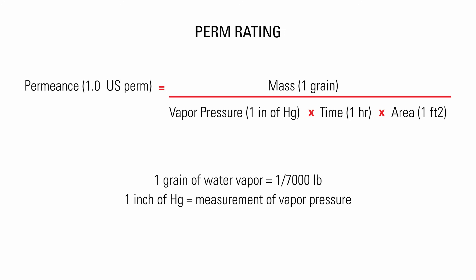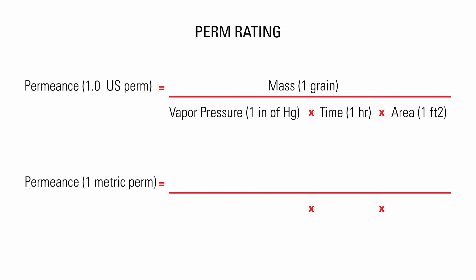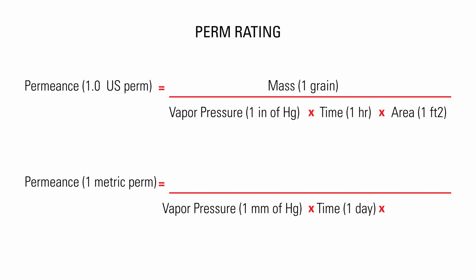An inch of mercury is a measure for vapor pressure. In the metric system, a perm rating of 1.0 means that in one day, when the vapor pressure difference between the cold side and the warm side of a material is 1 mm of mercury, 1 gram of water vapor will pass through 1 square meter of the material. One metric perm is equal to approximately 1.5 US perms.